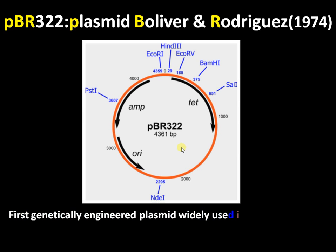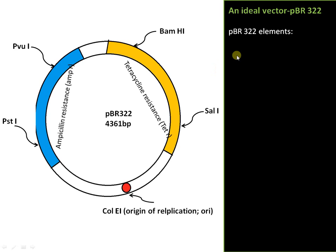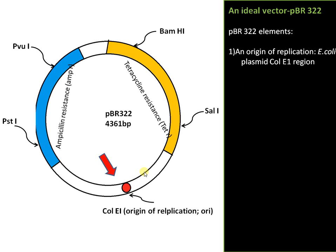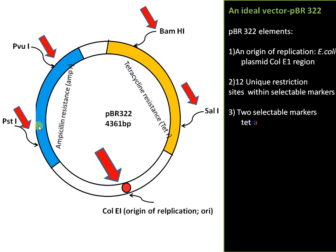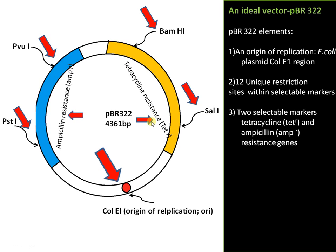pBR322 was the first widely used genetically engineered plasmid in recombinant DNA technology. The pBR322 elements include: an origin of replication derived from E. coli, at least 12 unique restriction sites such as BamHI, SalI, PvuI, and PstI, and two selectable markers — an ampicillin resistance region and a tetracycline resistance region.